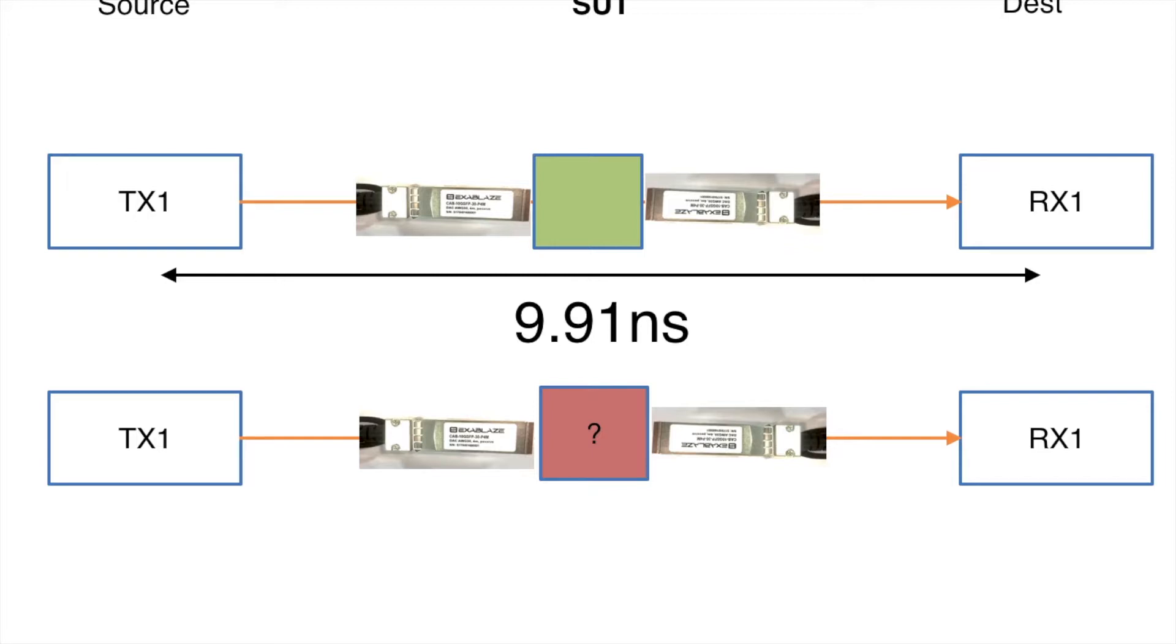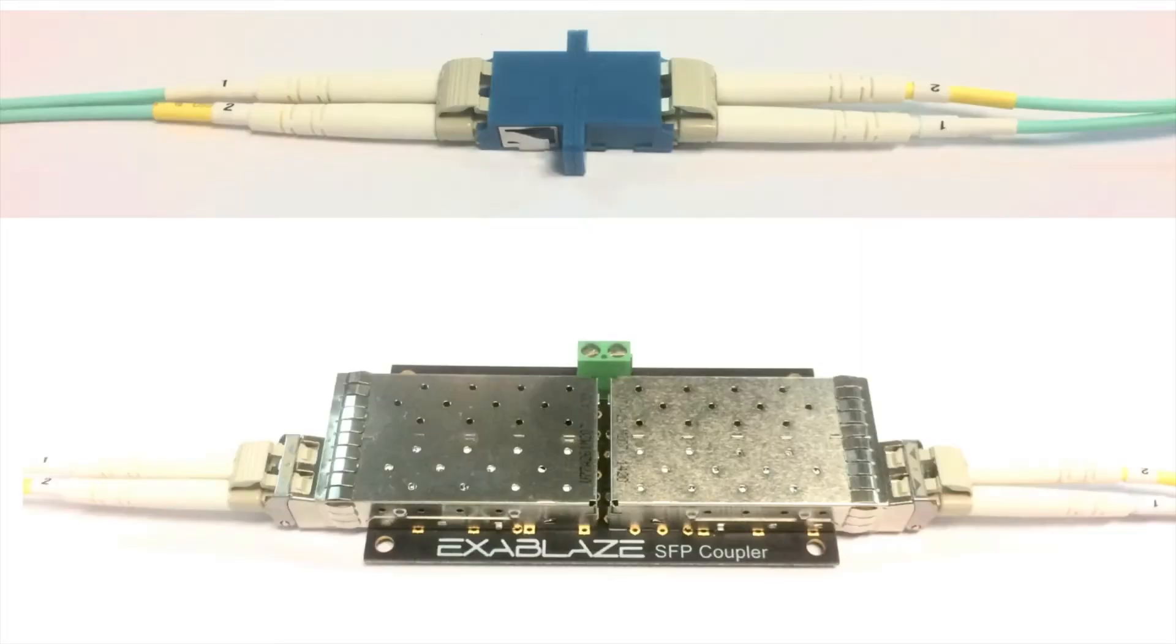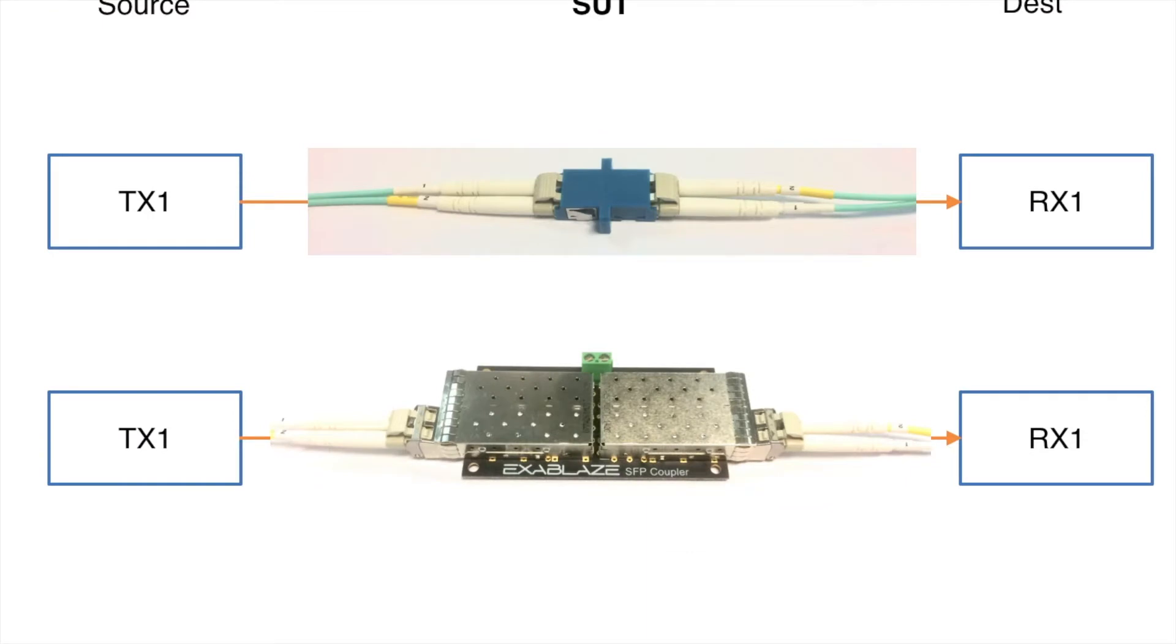Now what you may wonder is whether we could apply that same measurement methodology to measuring something like an optical SFP device. So this is exactly what we've done. We applied the same setup where we have an optical coupler and our copper copper coupler, and we again use these to eliminate errors in each other's systems.